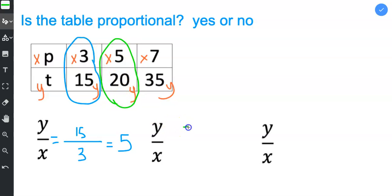My y value is 20 and my x value is 5, and 20 divided by 5 is 4.